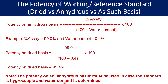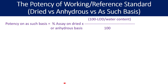The third important term is the potency on an as-such basis. The calculation formula is: percent assay on either dried basis or anhydrous basis, multiplied by (100 minus loss on drying or water content), divided by 100. The meaning of as-such basis is that you are not going to correct the assay for any water or vaporizable impurities present in the standard — irrespective of the water content or residual solvent, the potency is reported just as it is.